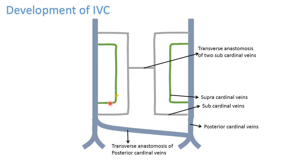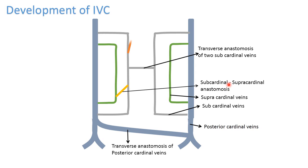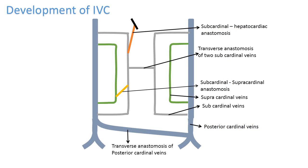These supracardinal veins will communicate with the sub-cardinal vein on the right side via the sub-cardinal supracardinal anastomosis. The hepatocardiac channel will communicate with the sub-cardinal vein via the sub-cardinal hepatocardiac anastomosis.